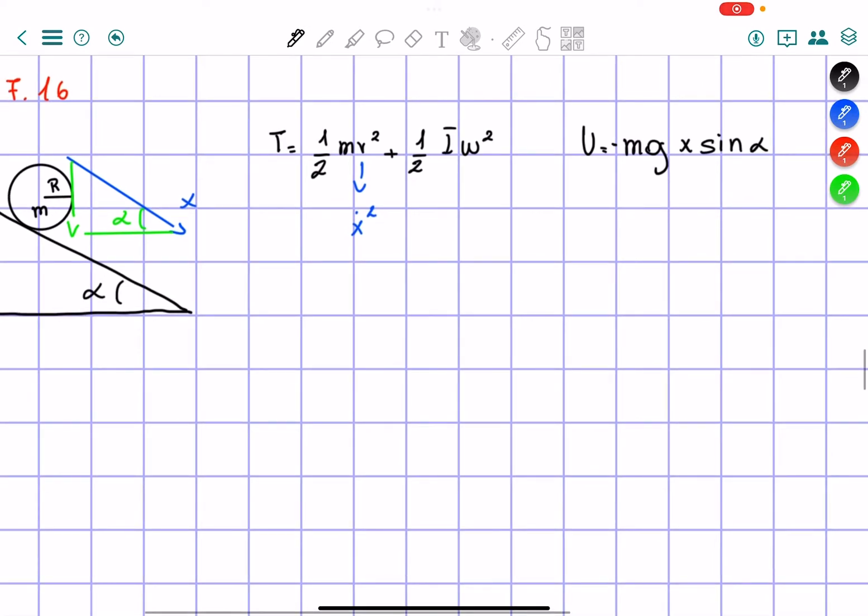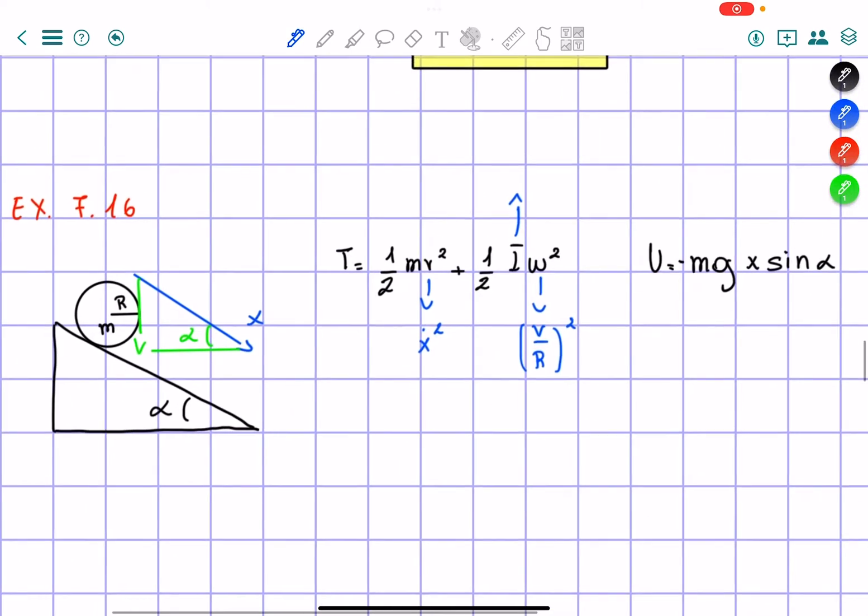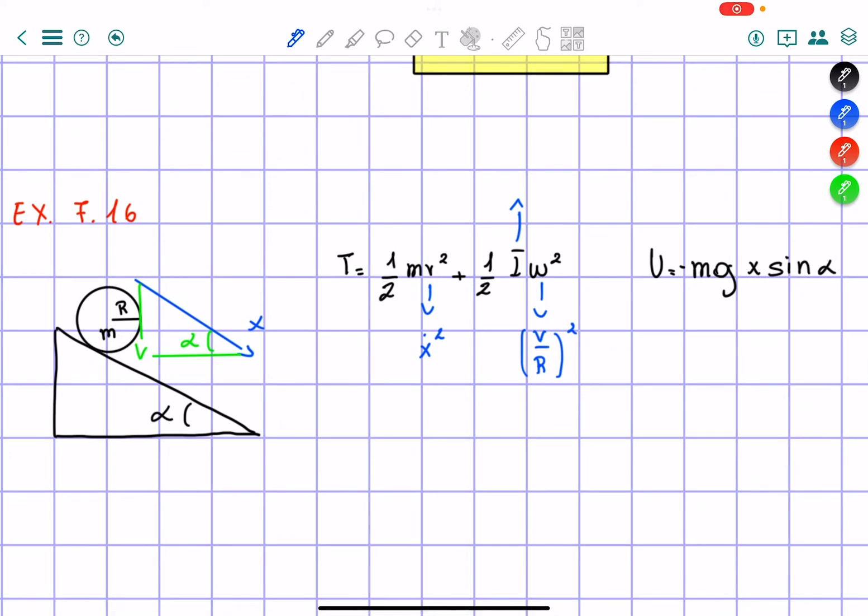Alright, so for the Lagrangian, one other thing I want to do is this ω equals v over capital R, everything squared. Now, one other thing you can look at is this I. This I is a little hard to express, not because we don't know what it is, but because if we have for example a hollow cylinder or a non-hollow cylinder, we have different moments of inertia.